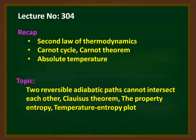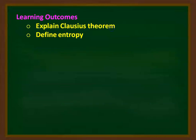In this lecture, we are going to discuss how two reversible adiabatic paths cannot intersect each other. We will derive the Clausius theorem, define the property entropy, identify entropy, and study the temperature-entropy plot. The learning outcome: at the end of the lecture, we will be able to explain the Clausius theorem and define entropy.